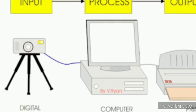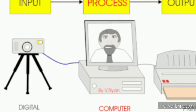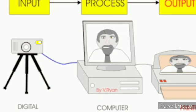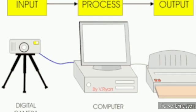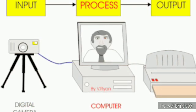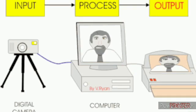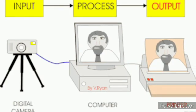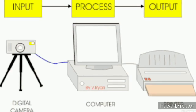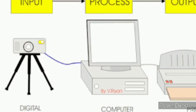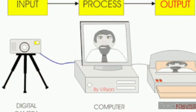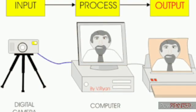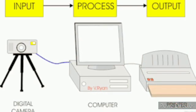Now we will see the input, process, and output. In this picture we can see that a camera is capturing a picture, so the camera is an input device. When it clicks the picture, it goes to the monitor and is processed. After that it goes to the printer and it prints that picture. So the camera is an input device and the printer is the output device.